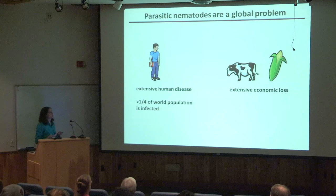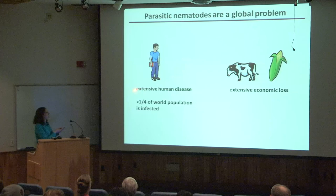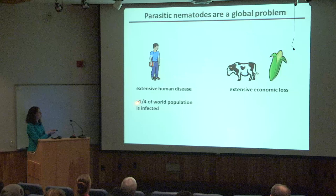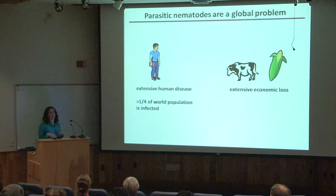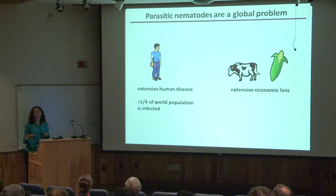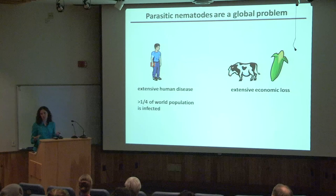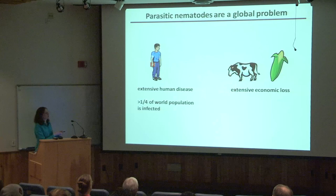One of the reasons we're interested in parasitic nematodes is that they're a serious problem. Human parasitic nematodes cause extensive disease worldwide, particularly in developing countries. It's estimated that over a quarter of the world's population is infected with parasitic worms, and in some villages in Africa over 80% of the population is infected with at least one species of parasitic nematode. In addition, parasitic nematodes of livestock and plants cause billions of dollars in economic losses each year.